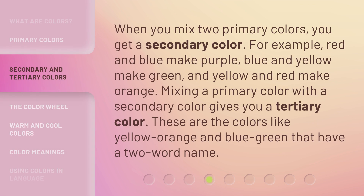When you mix two primary colors, you get a secondary color. For example, red and blue make purple, blue and yellow make green, and yellow and red make orange. Mixing a primary color with a secondary color gives you a tertiary color. These are colors like yellow-orange and blue-green that have a two-word name.